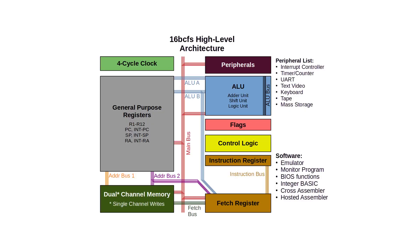My 16-bit computer design has several buses. There are a few buses that only have a couple of endpoints, but there are several that have many endpoints where multiple different things could be asserting onto the bus or pulling data from the bus. It's important that the bus only has one thing on it at any given time. I need to be able to emulate a bus - whether it's the ALU, which will require ALUA and ALUB, or the general purpose registers driving into address bus one and the main bus.